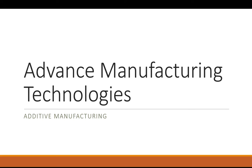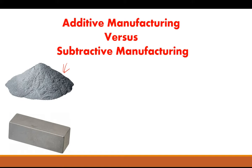Let's get started on additive manufacturing. You've got additive manufacturing and you've got another process or family of processes called subtractive manufacturing. When you think of additive manufacturing, you can think of a raw material — typically in a powdered form, though it could be a wire or a filament — but let's say a powdered form.